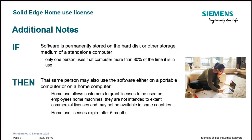Some additional notes pertaining to the home use license: keep in mind this is not a production commercial type of license, so there are some requirements. If software is permanently stored on a hard disk on a standalone computer, then only the one person who uses that computer more than 80% of the time may use this home use license. It can be used on either a portable computer or a home computer. Home use licenses are not intended to extend commercial licenses and may not be available in some countries. Usually the home license expires after six months.